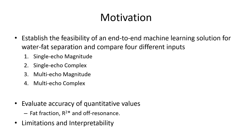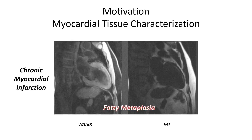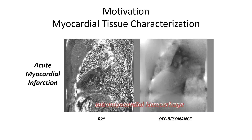We identified some limitations and provide insight into interpretability. Water-fat separation is useful for myocardial tissue characterization. For example, in chronic myocardial infarction it can identify fatty metaplasia, and in acute myocardial infarction, intramyocardial hemorrhage can be identified using R2 star maps and off-resonance maps.